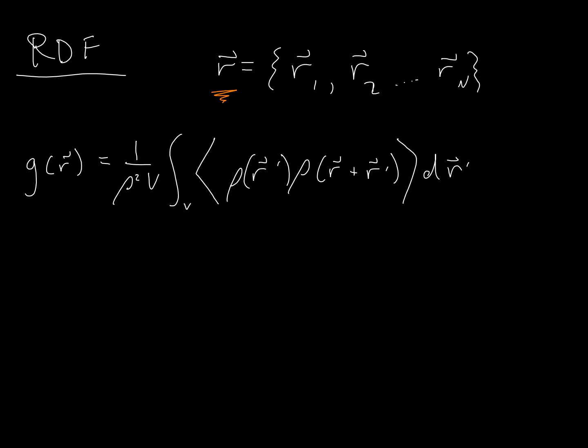This is the radial distribution function. These brackets, when you see them, mean average over all particles. Sometimes you'll hear this referred to as an ensemble average. You're averaging over all of the different possible configurations over time and different individual atoms.